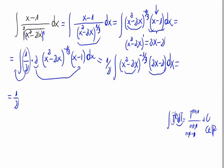With the formula we would have the base, x squared minus 2x, raised to n plus 1 — where n is minus 1 third — so minus 1 third plus 1, divided by n plus 1, that is minus 1 third plus 1, plus c, the constant.